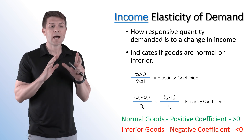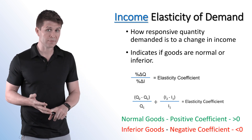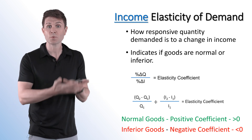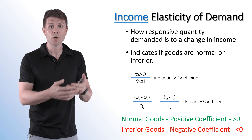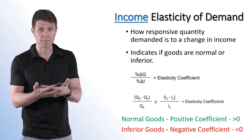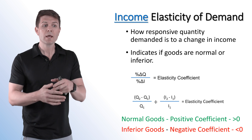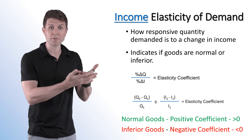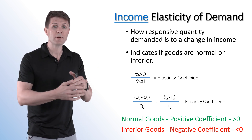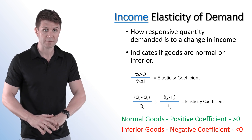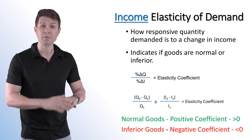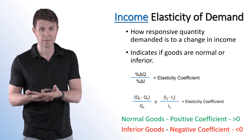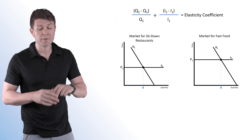If the coefficient is positive, it means they are normal goods — an increase in income results in an increase in quantity demanded. If it's a negative coefficient, it means that an increase in income results in a decrease in quantity demanded, or a decrease in income results in an increase in quantity demanded. Let's look at an example.